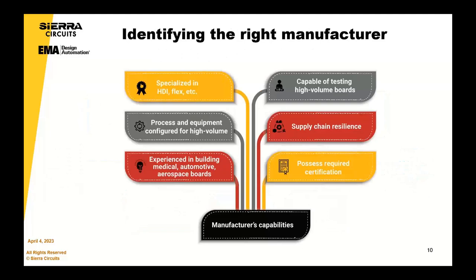Identifying the right manufacturer is really key. It really starts with understanding the manufacturer's capabilities, understanding the company, how they're managing their supply chain, what certifications they have, and what type of technical capabilities they have. These are all the key stages which seem important in choosing the right manufacturer from the get-go.